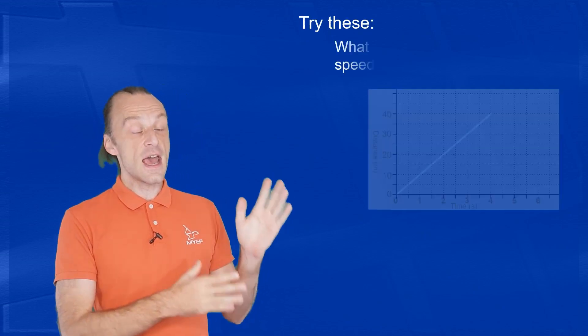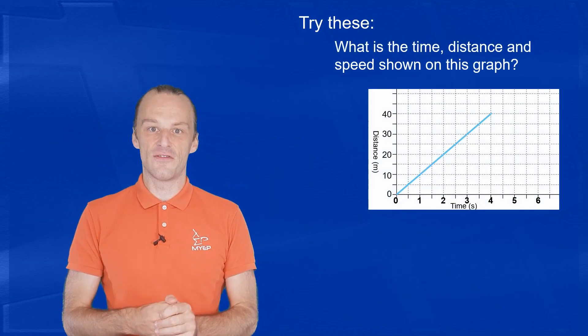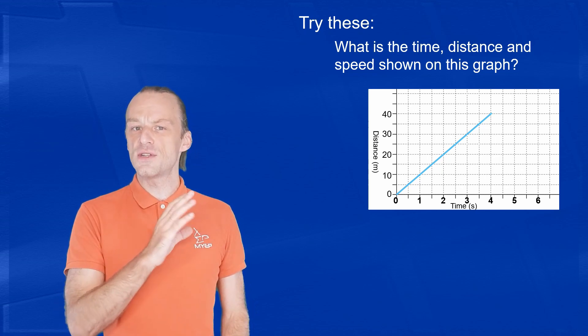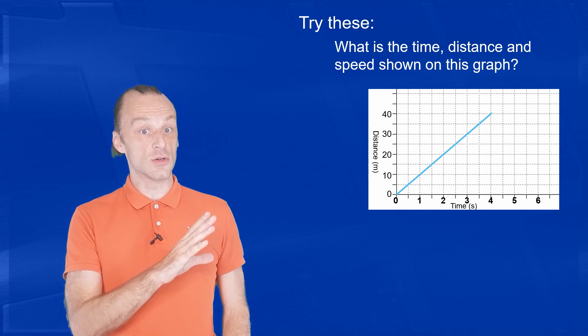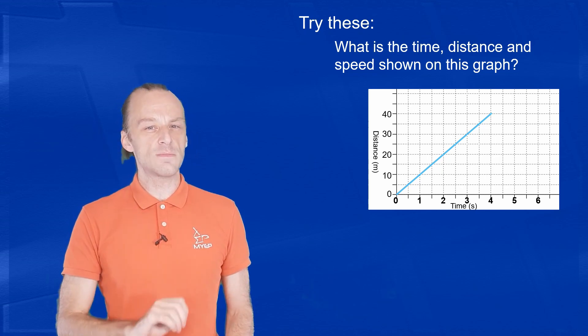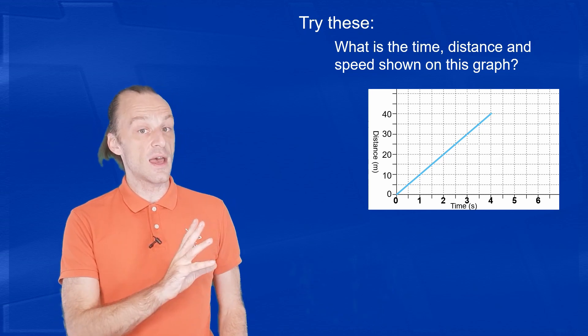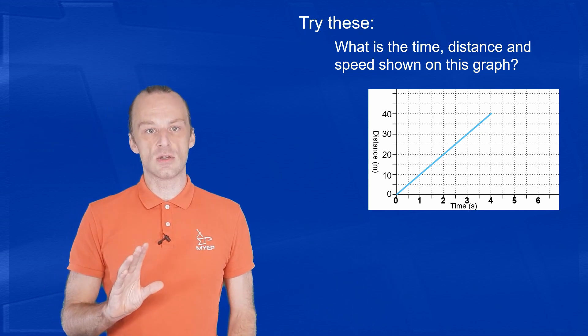Let's try a few examples. Remember to pause if you need to, so you can have a think about them. Here is another distance time graph. Can you tell how far this object moved, how long it took to move, and also what speed it was moving at? It's a straight line, so we know that the speed is constant.